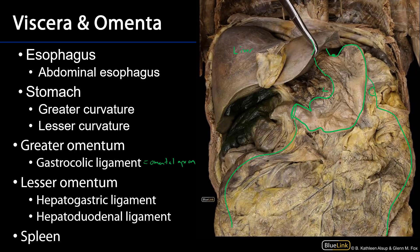Those terms are used synonymously. In terms of the lesser omentum, which runs between the lesser curvature of the stomach and the liver, there are two peritoneal ligaments here. This is the hepatogastric ligament. And then between the duodenum and the liver, that would be the hepatoduodenal ligament. The hepatogastric and hepatoduodenal ligaments are contiguous, so they form a solid sheet.